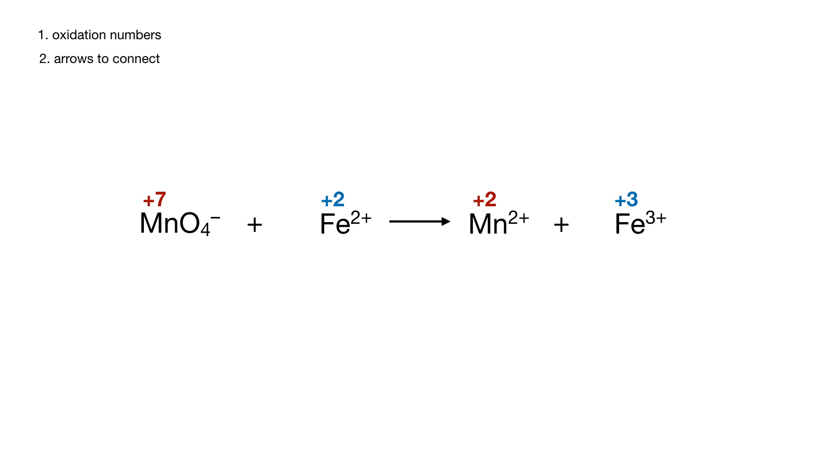Step 2, we're going to join each species to its counterpart with an arrow. So now we have both half reactions shown on the same line. Number 3, let's make sure there's the same number on each side of that arrow of species that are not oxygen or hydrogen. And we're already good on that.